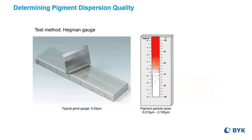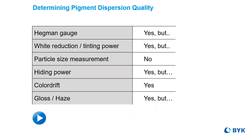We know what is commonly used in all of the markets and we challenge those routine testing strategies. Particularly when it comes to things like the Hegman grind gauge, when carbon black and organics are smaller particle sizes than the gauge would ever pick up as oversized pieces. We focus on consistency and dependability as the result, and we find that color drift and rub-ups provide the best data.